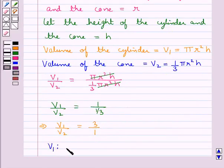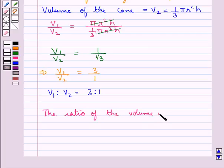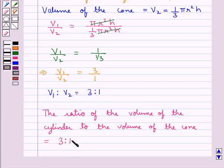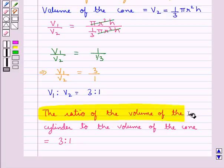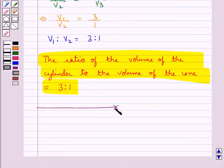That is V₁ to V₂ equals 3 to 1. Or you can say that the ratio of the volume of the cylinder to the volume of the cone is equal to 3:1. So this is our final answer. This completes the session. Hope you have understood the solution of this question.